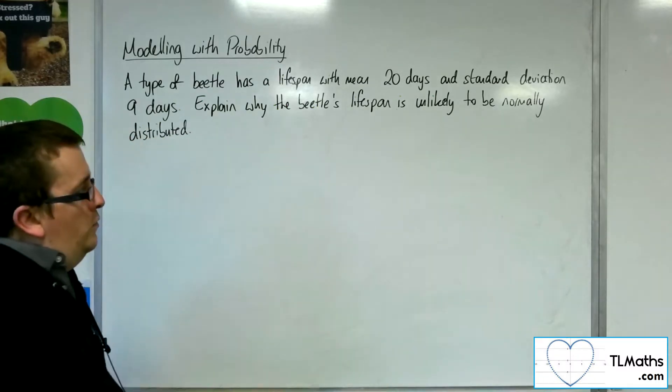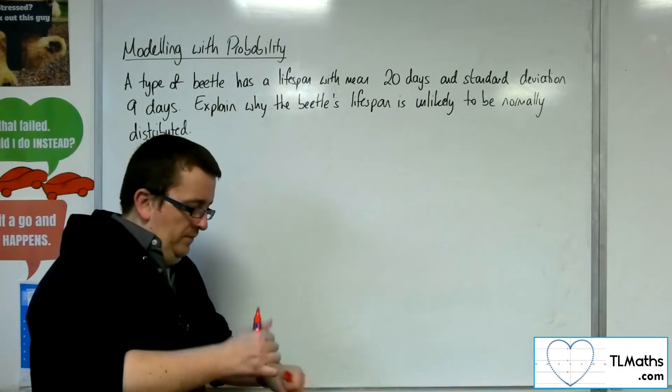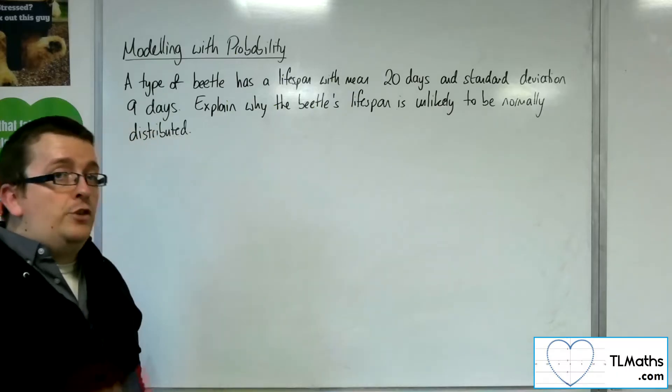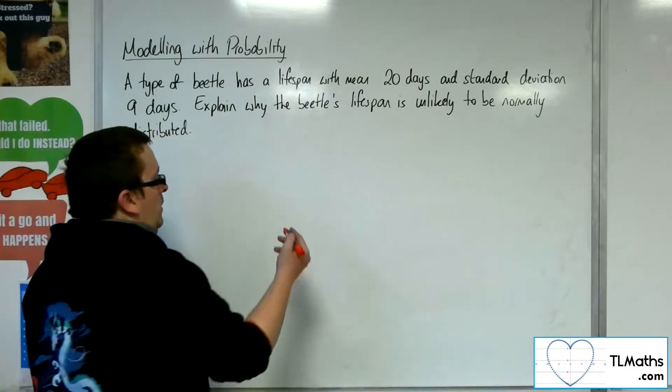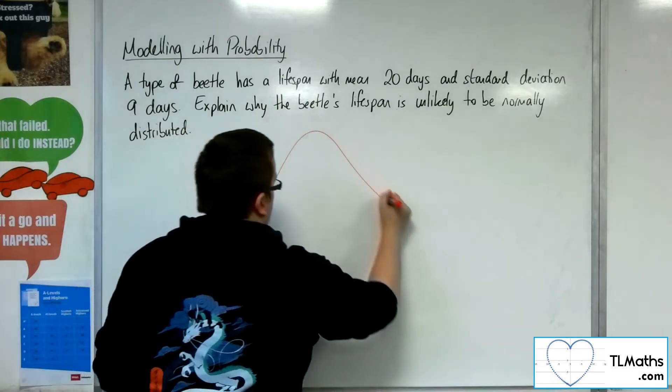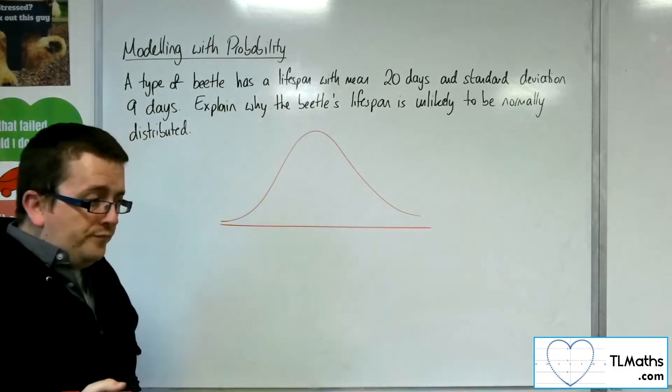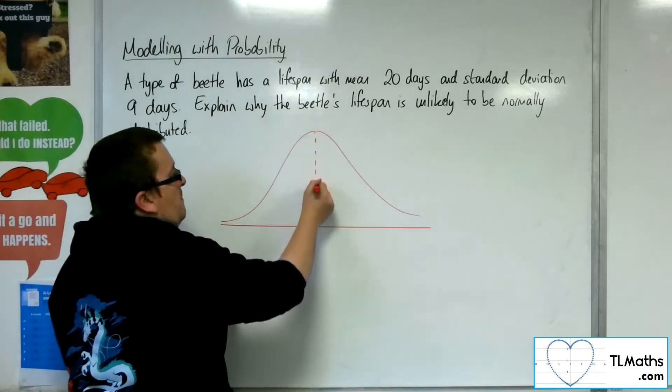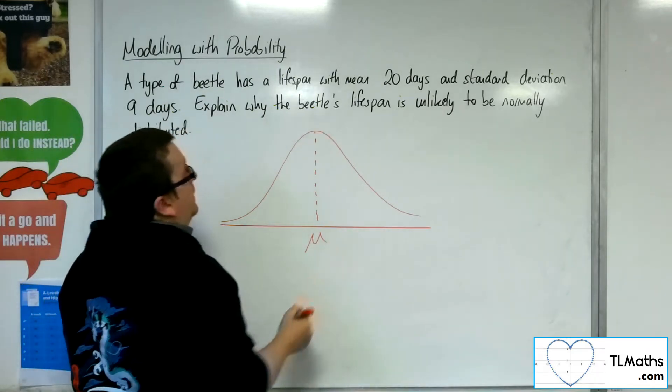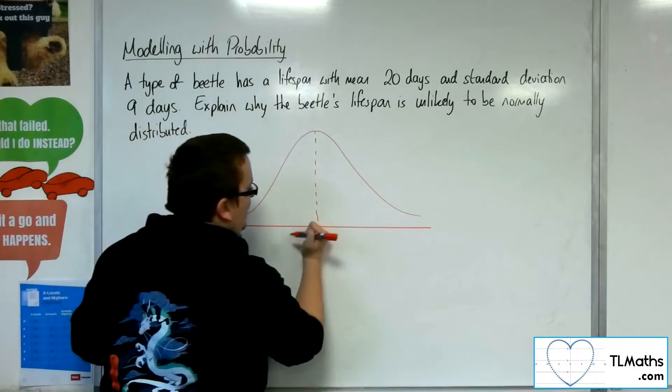What we know is that to be normally distributed, if our distribution looks like that, then if the mean is in the centre, so if our mean's at 20 days...